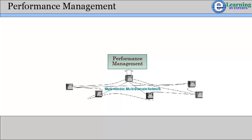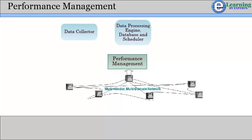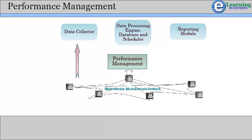The performance management system generally comprises a data collector, data processing engine, database, scheduler, and reporting modules. The data collector interfaces with devices directly or through the EMS and gathers usage-related information. The data processing engine receives this data from various data collectors, and after processing, stores and collates the data into a single database.